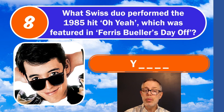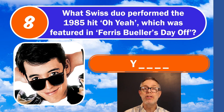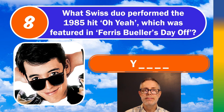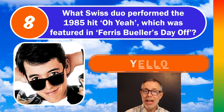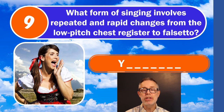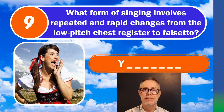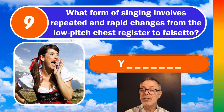Question number eight: what Swiss duo performed the 1985 hit 'Oh Yeah,' which was featured in Ferris Bueller's Day Off? The answer is Yello — no W, just Y-E-L-L-O. Question number nine: what form of singing involves repeated and rapid changes from the low-pitched chest register to falsetto? The answer is Yodeling.